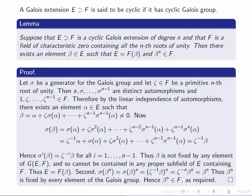Let's look at the proof. The Galois group is cyclic, so let's take a generator, say sigma, and let's take a primitive nth root of unity zeta in F. We know that the elements of the Galois group are linearly independent as linear transformations of E. So if we take the complete set of elements of the Galois group — sigma up to sigma^(n−1) — and we take the elements 1, zeta, up to zeta^(n−1) in F, then the corresponding linear combination of the sigma^i cannot be zero. In other words, there must exist an element alpha such that when we evaluate the sum at alpha, the result is not zero.